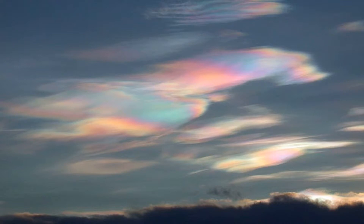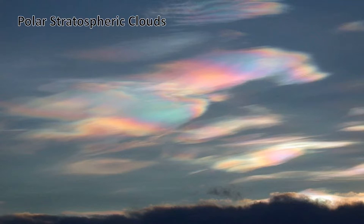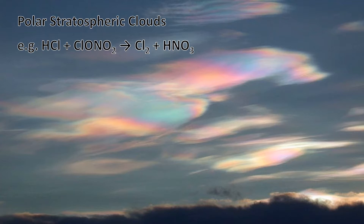The stratosphere is very dry and stable, and there are very few clouds. However, in the Antarctic during the winter, it gets cold enough — about 185 degrees Kelvin — to form clouds in the stratosphere called polar stratospheric clouds. These clouds provide a surface on which the reservoir species can break back down into their radical forms.